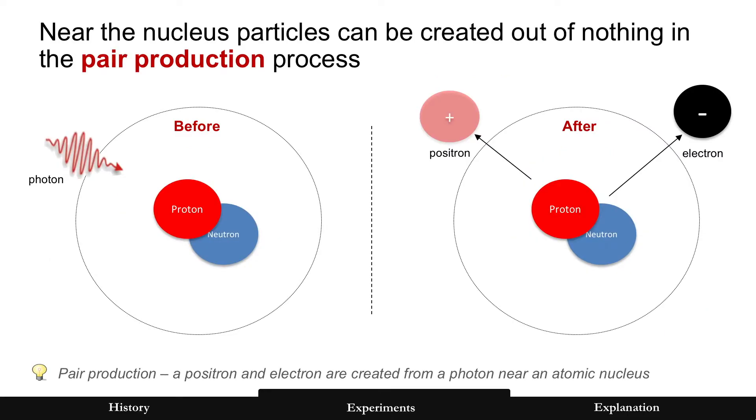And more experiments. Near the nucleus of an atom, two particles can be created out of nothing called the pair production process. A photon hits and the results are two particles, a positron and electron. Where did those come from?